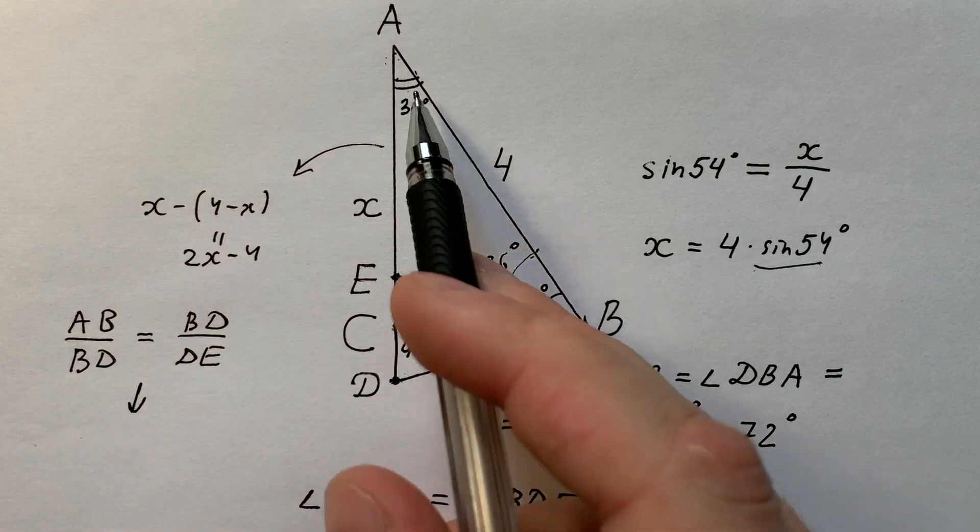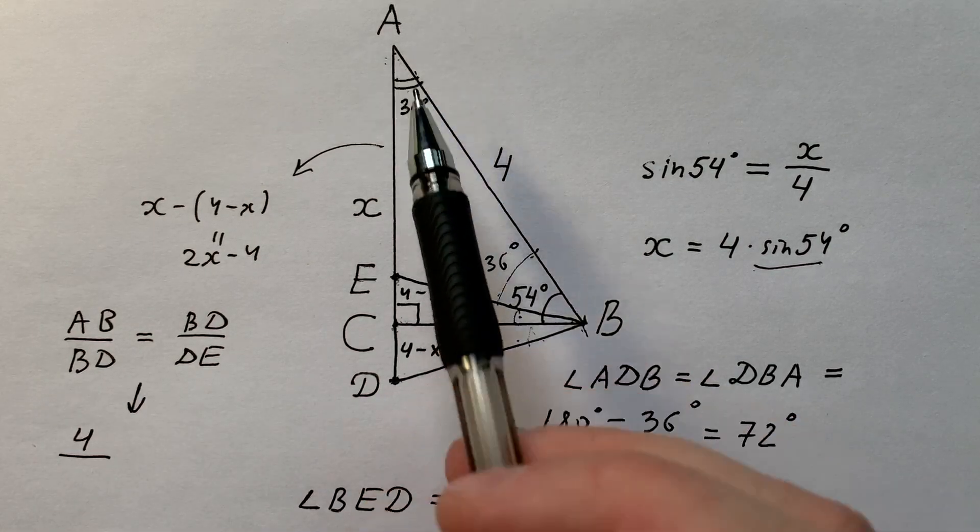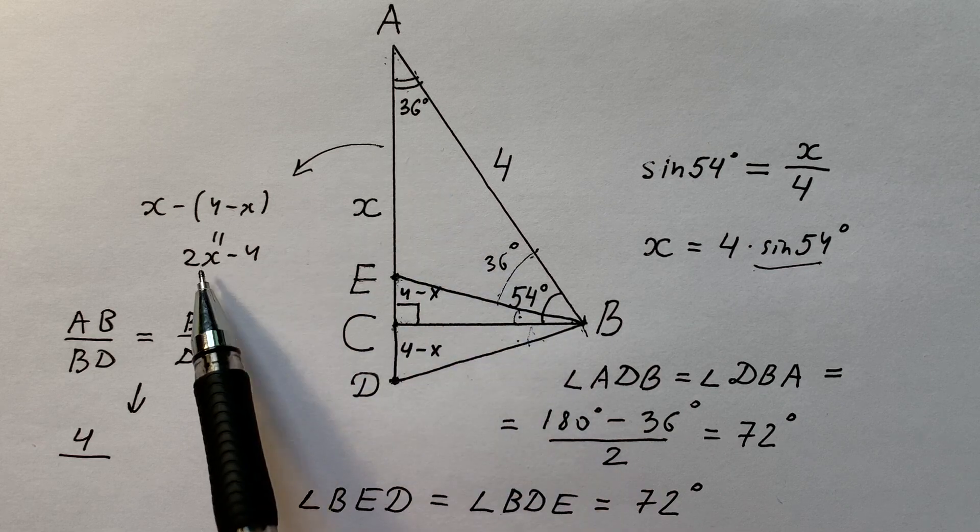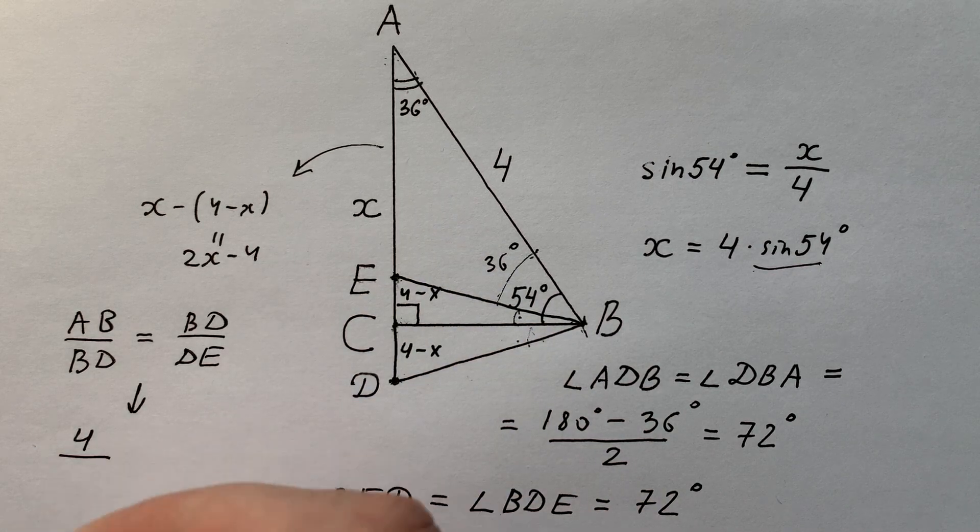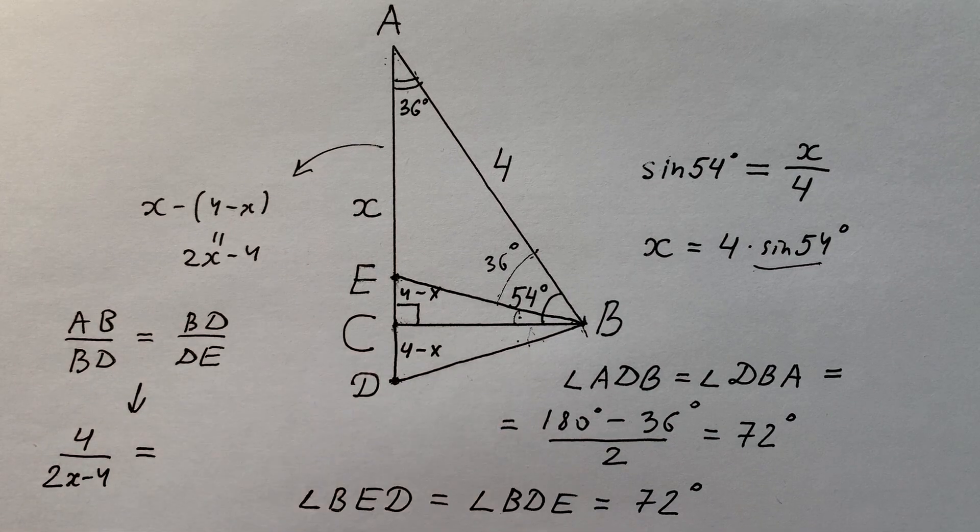And from this proportion, AB equals 4, BD equals EB and it equals AE, and AE equals 2x minus 4.